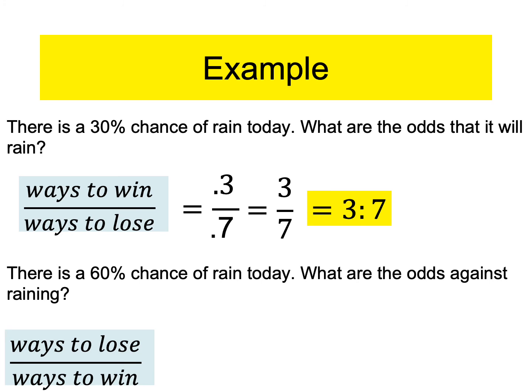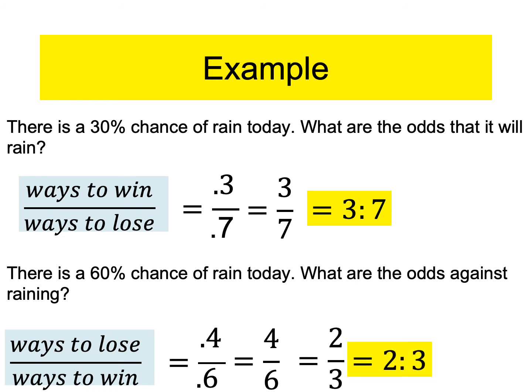Now odds against. Remember, odds against are lose over win. The information you're given — 60% chance of rain — defines winning. So 0.6 goes on the bottom. What's left over? 40%, or 0.4, goes on the top. Move the decimal once: four over six. Reduce the fraction: two to three. So two to three odds against raining. There are three chances it will rain and two chances it won't rain — it's probably going to rain today. Odds against are typically the most challenging — remember, the given percentage always defines winning.